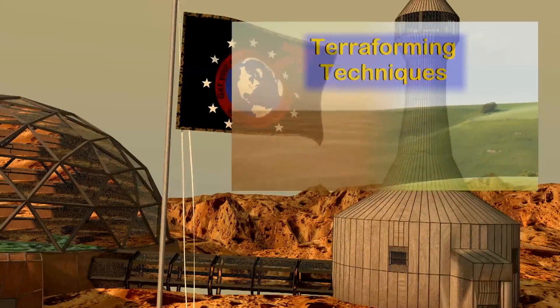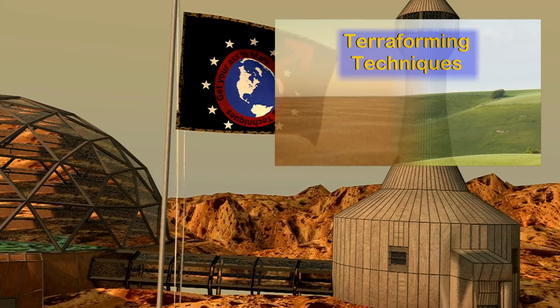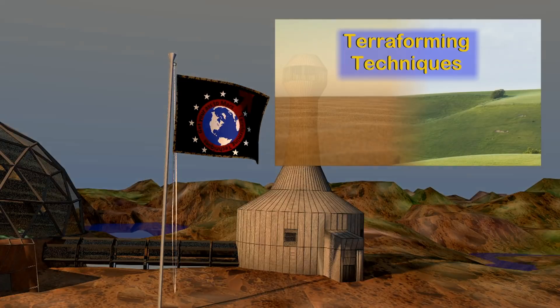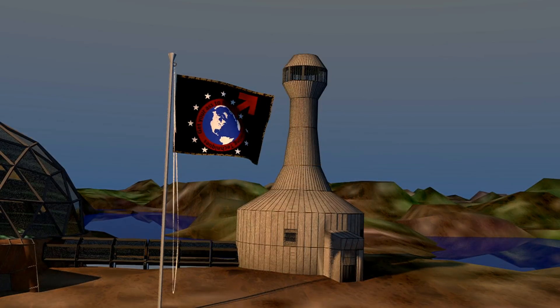Similarly, if you've watched the terraforming video you know that colonizing any planet is a major undertaking, but the more like Earth it is the easier it is. So looking at how life might originate on Earth-like planets, or how we might colonize them, just isn't all that interesting.